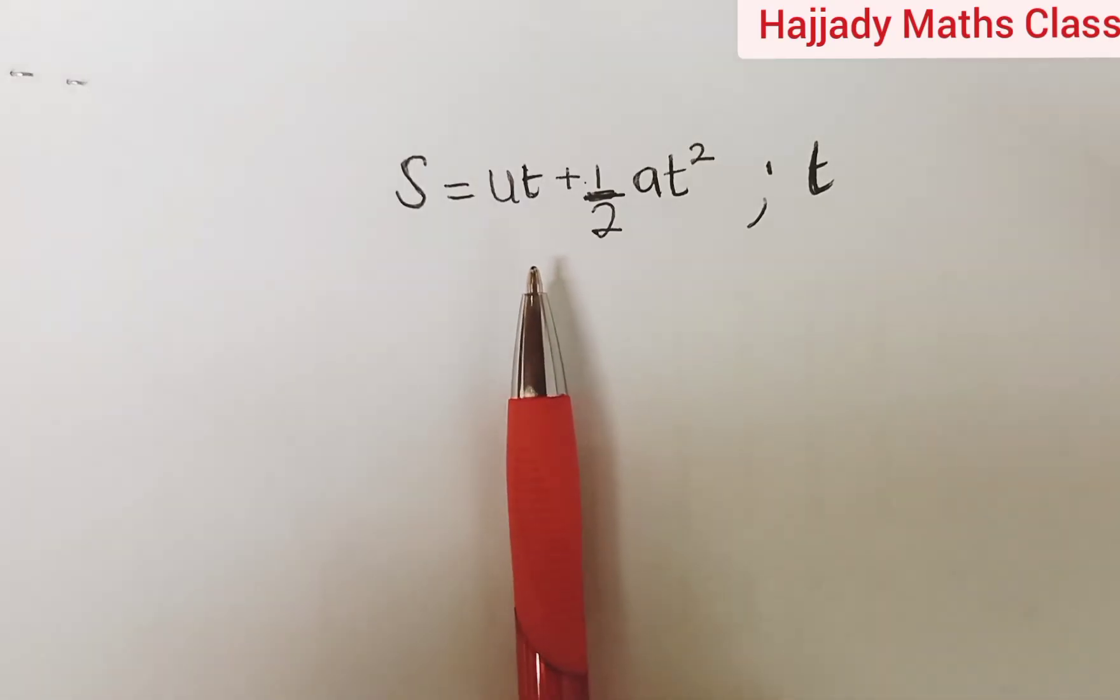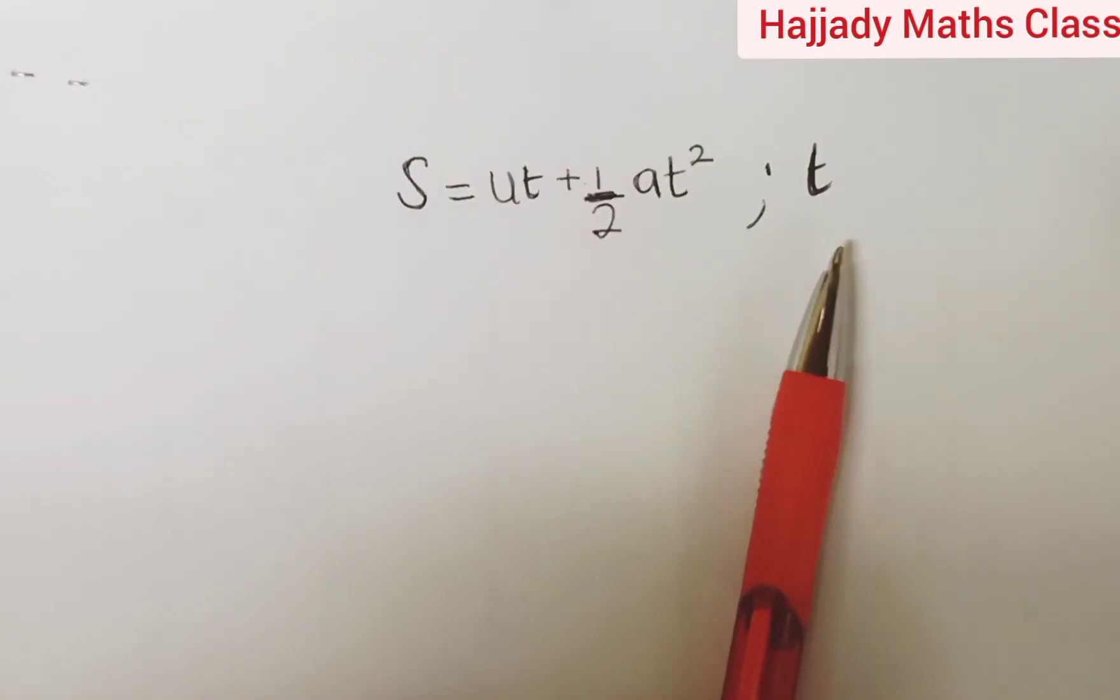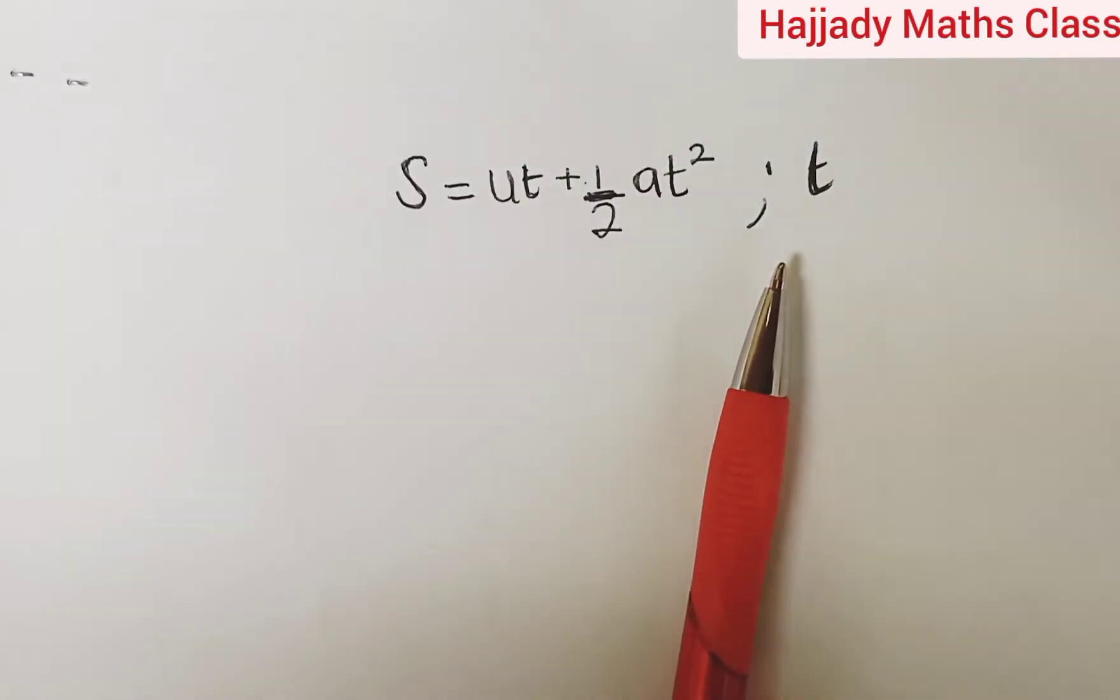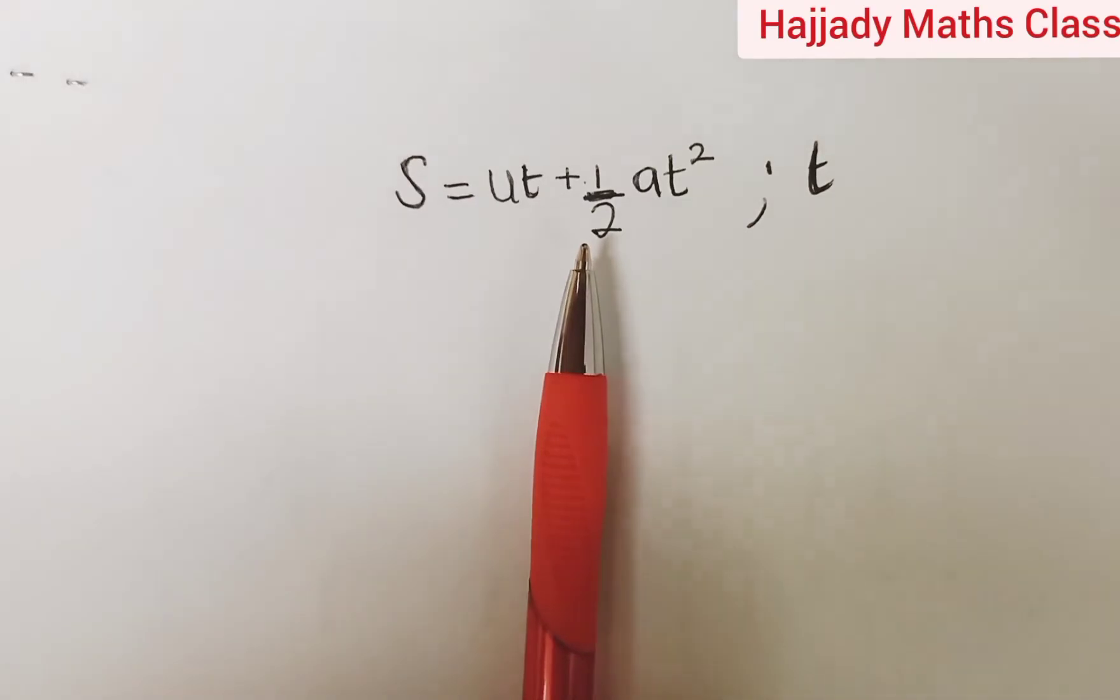Today we have s equals ut plus 1/2 at squared, make t the subject of the formula. And for us to do this, the first thing we have to do is multiply by 2 so that we can eradicate this fraction.